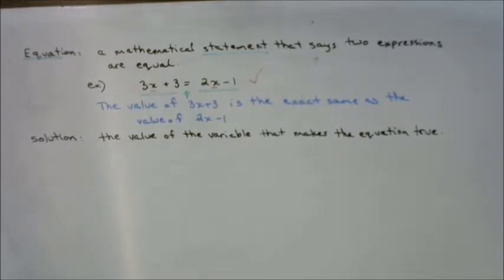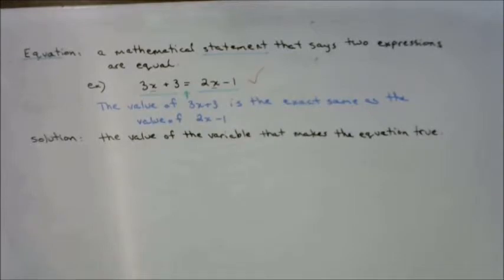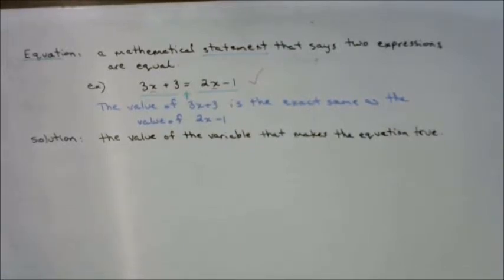We're going to look at this in a couple of different ways, and by the end of the lesson we'll pick the most sensible method. Example 1A has three methods: Method 1 — inspection, Method 2 — balance, and Method 3 — use the opposite operation. We'll learn what all those things mean.